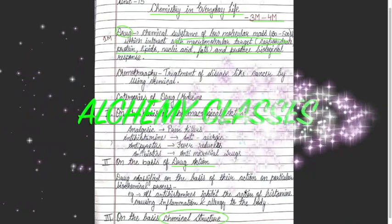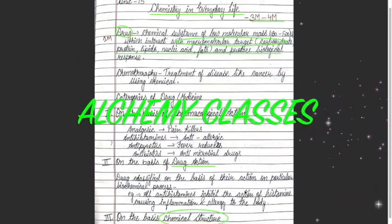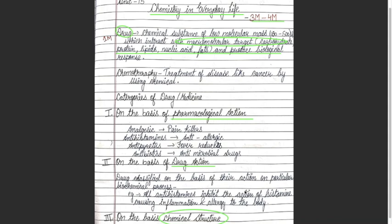Hello students, let's meet today again to start with Unit 15, the last unit of Class 12th Chemistry — Chemistry in Everyday Life. Let us start with this chapter. This chapter deals with three things: drugs in day-to-day life, chemicals in food, and soaps and detergents.